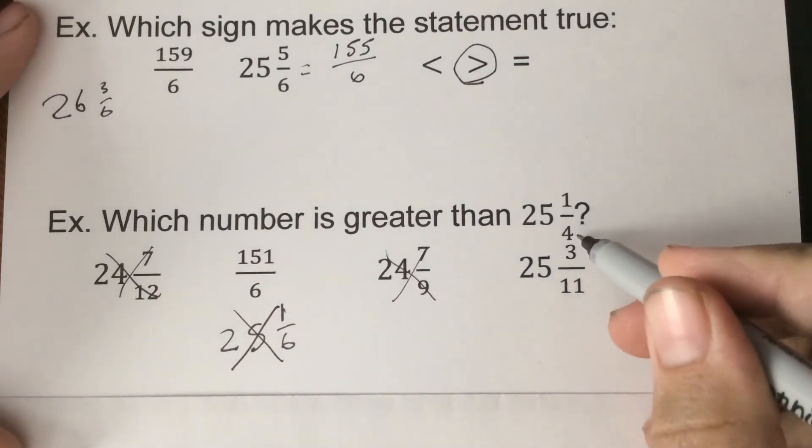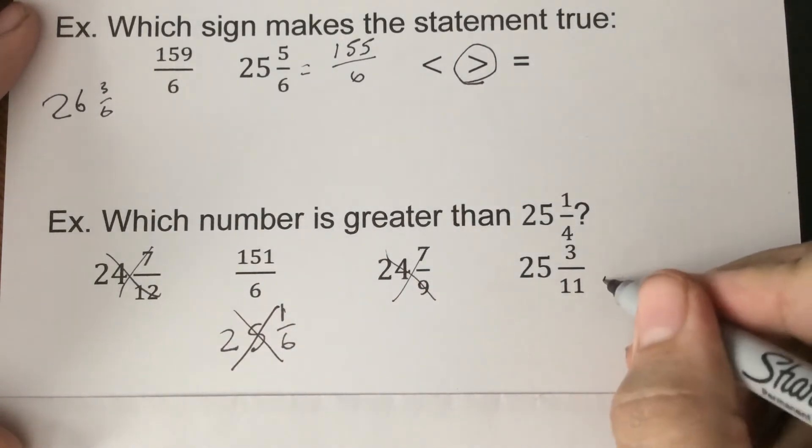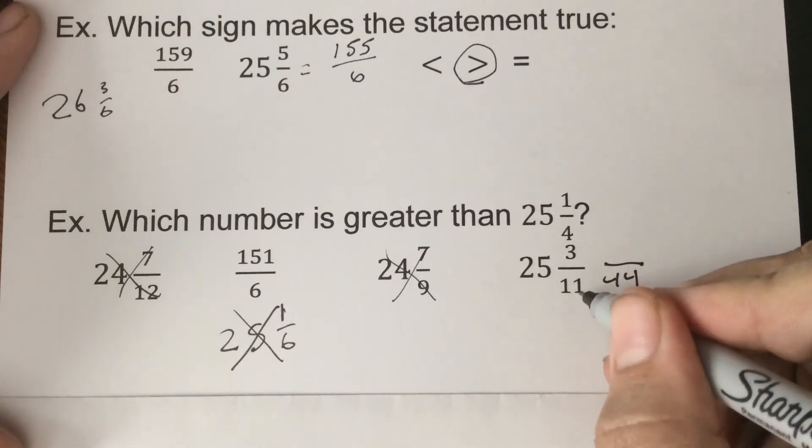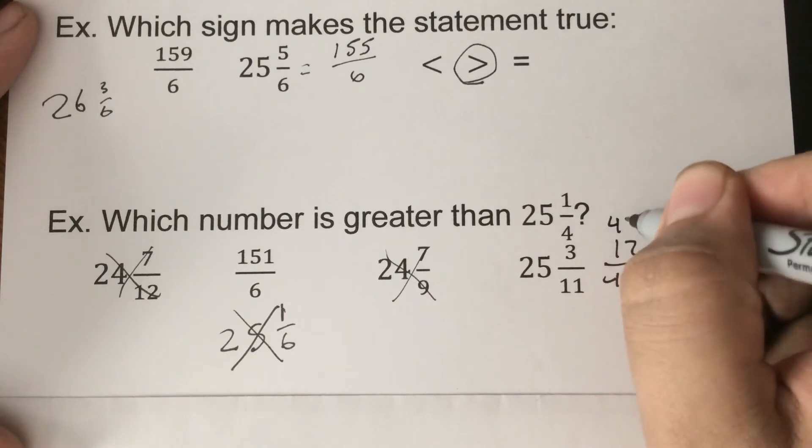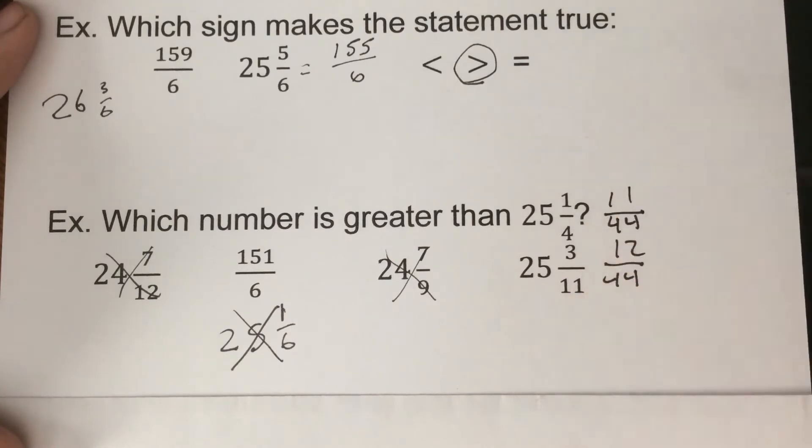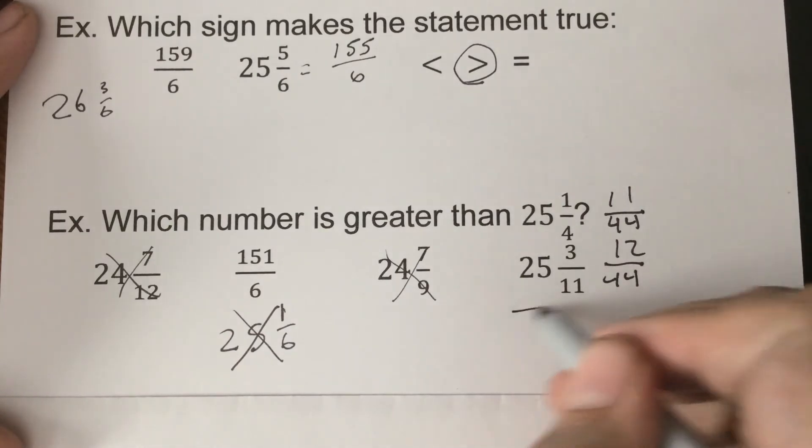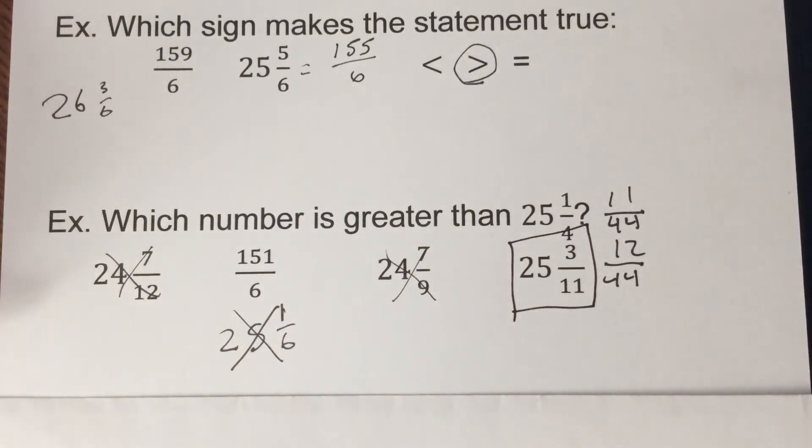Now 11ths and 4ths. 44 is what would be the common denominator there. So 11 times 3 would give us 33 here. 11 times 1 would be 11. So 3/11 is 12/44, and 1/4 is 11/44. So 25 and 3/11 is bigger than 25 and 1/4.